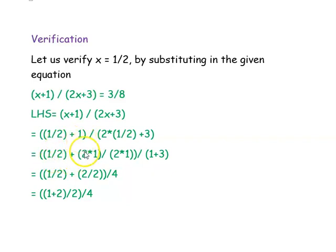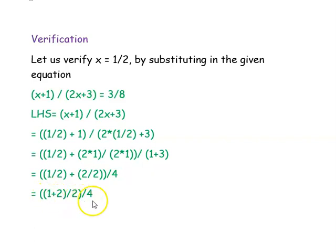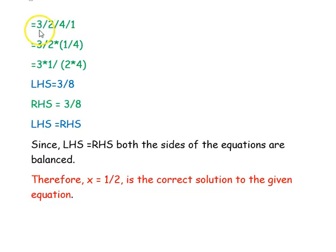For 1/2 + 1: making the denominator common gives (1 + 2)/2 = 3/2. For the denominator: 2 × 1/2 = 1, and 1 + 3 = 4. So we have (3/2) divided by 4. Now the denominator is 2, and we get 1 plus 2 divided by 2, divided by 4, giving 3/2 divided by 4/1.